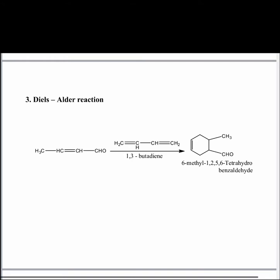Both involve in cyclization to form a cyclic product. Here 6-methyl-1,2,5,6-tetrahydrobenzaldehyde is formed as the product. So croton aldehyde reacts with 1,3-butadiene, involving cyclization to give 6-methyl-1,2,5,6-tetrahydrobenzaldehyde.